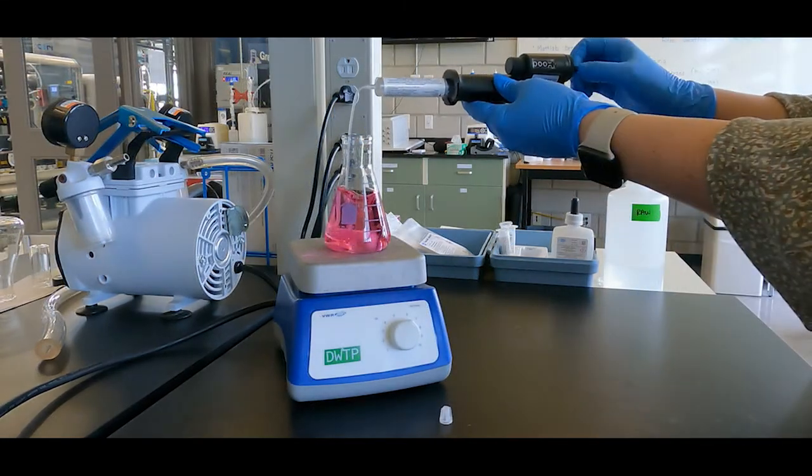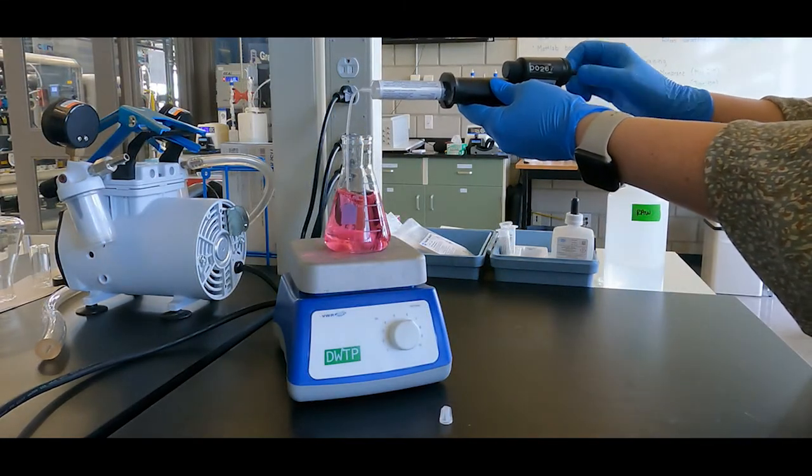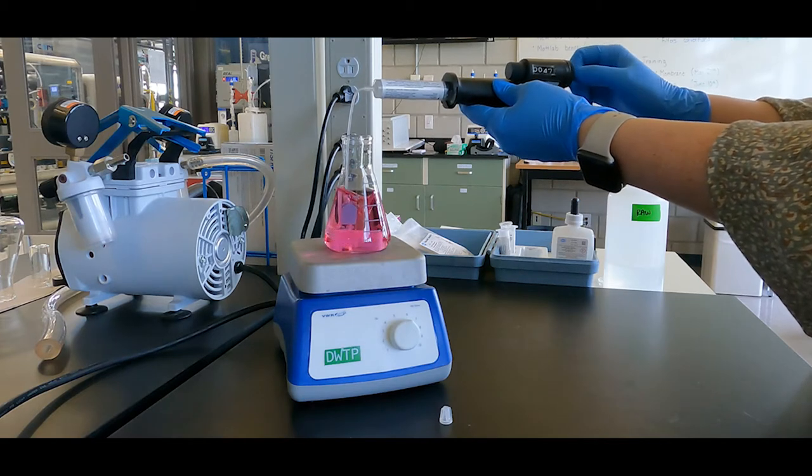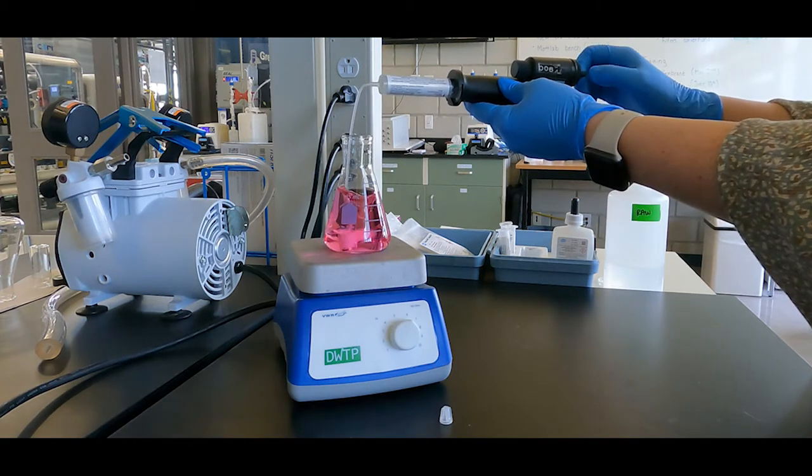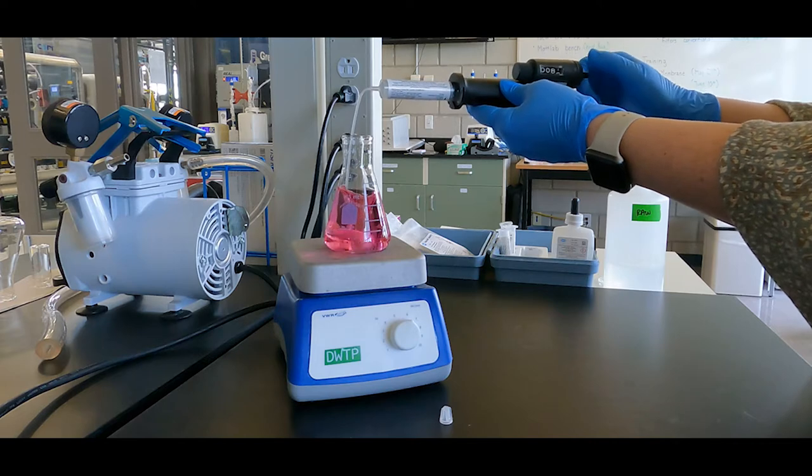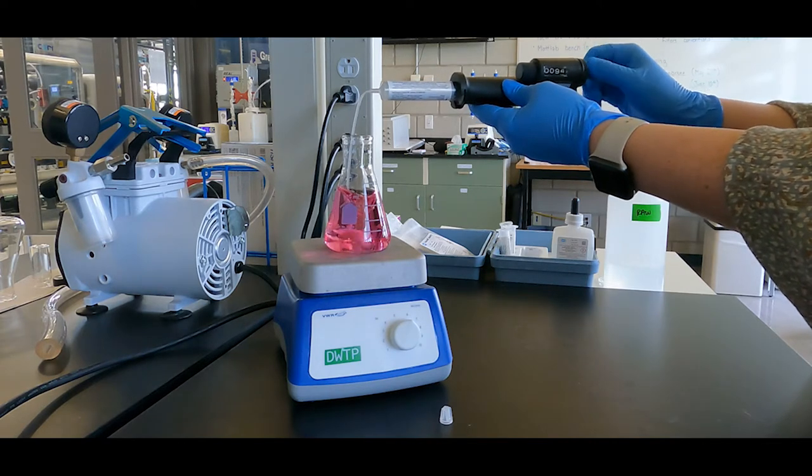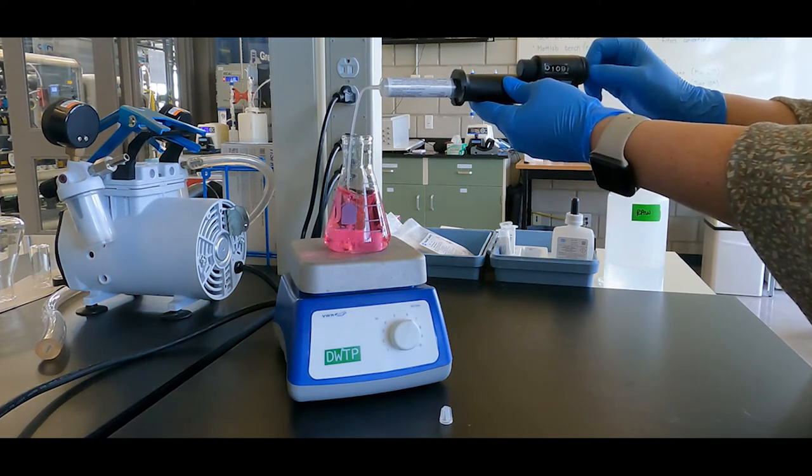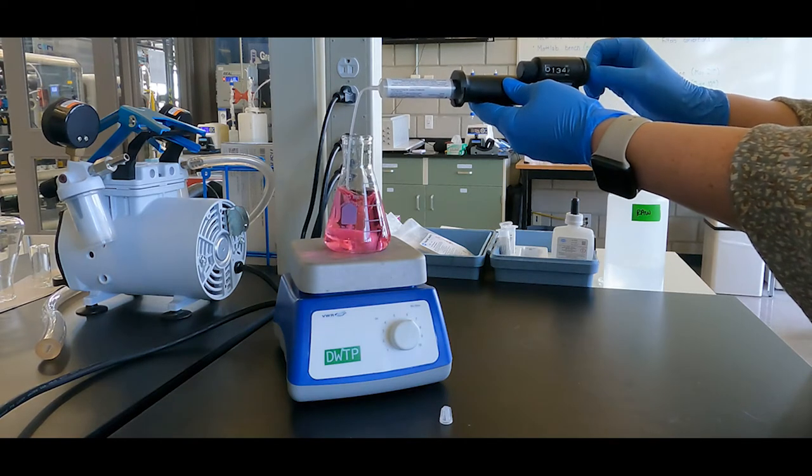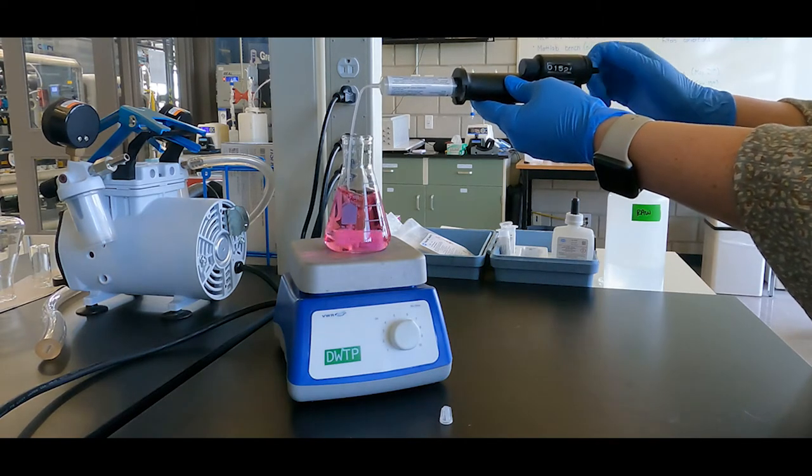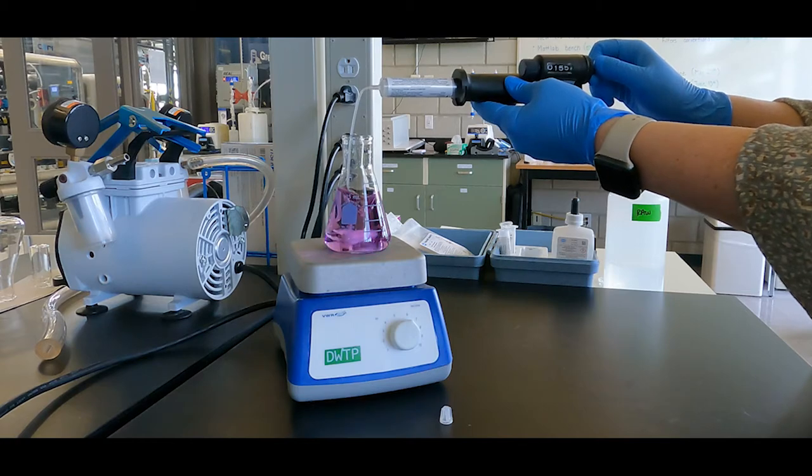Titrate the sample until the color changes from a red color to a pure blue color. As you titrate, you will know you are approaching the endpoint when you start to see flashes of color change for one or more seconds of duration. At this point, you'll want to titrate slower to make sure you do not overshoot the endpoint.